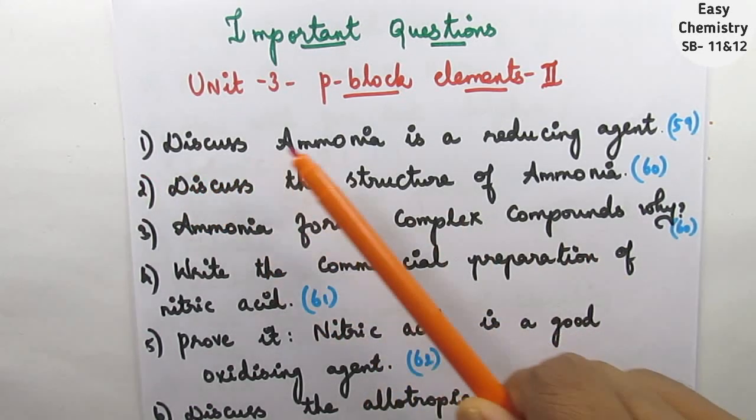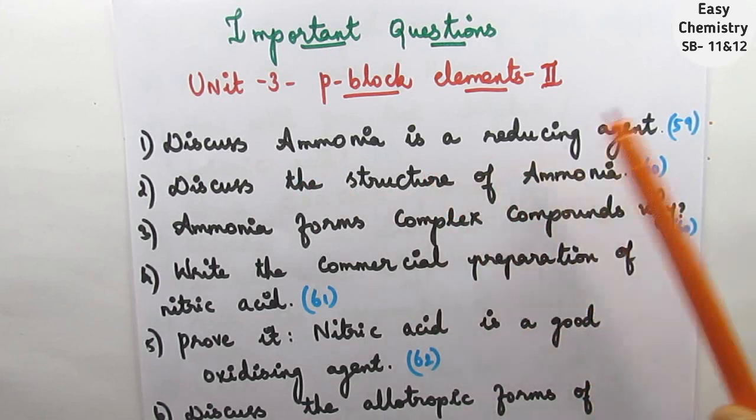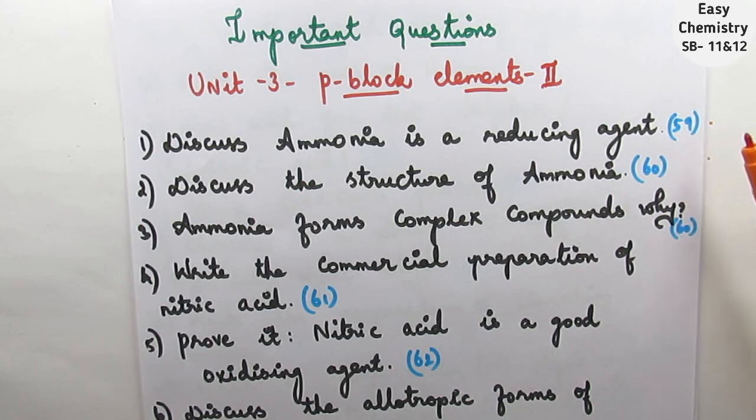Question number 1: discuss ammonia, is it a reducing agent? Ammonia is a reducing agent, page number 59. The textbook is page number 59. Now, here is the textbook, that is always good.